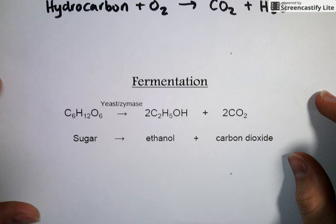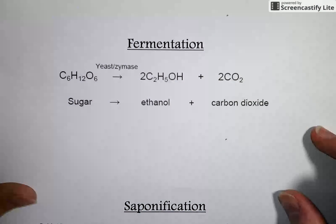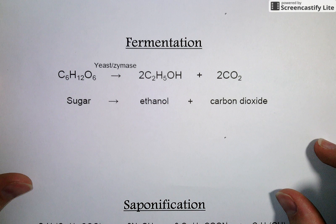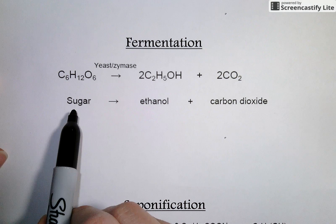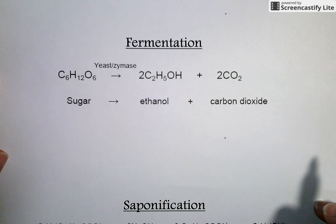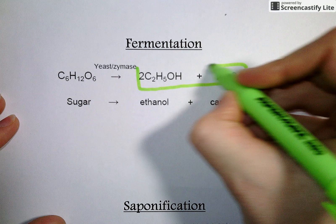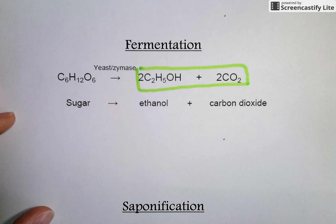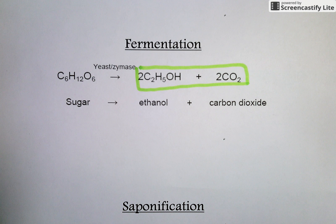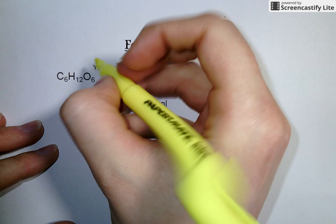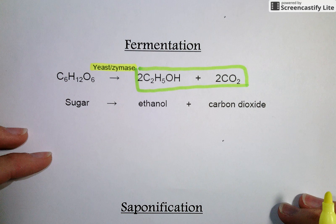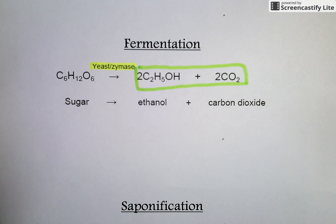The second reaction type is fermentation. This is a familiar process in the kitchen, because fermentation is the conversion of sugar into ethanol and carbon dioxide. This ethanol and CO₂ are the characteristic products of all fermentation. This is a process we don't do on our own — we let biology do it for us. So for a fermentation reaction, you're always going to see the use of some enzyme or yeast, because these biological molecules are very good at converting sugars into alcohol and carbon dioxide.